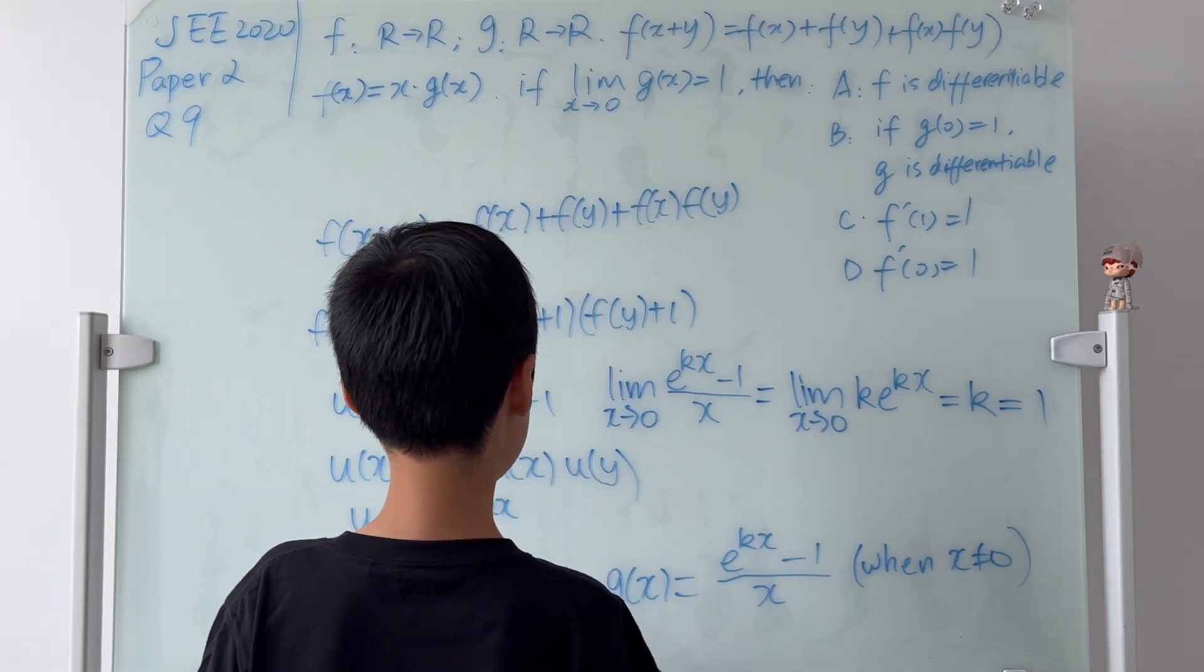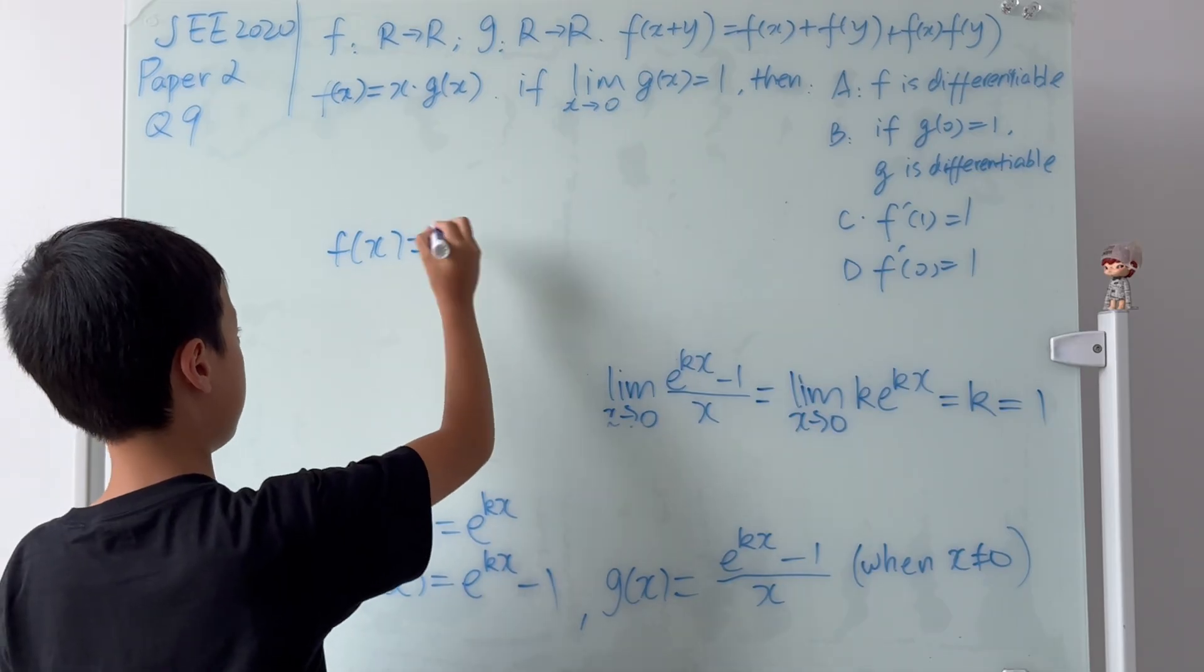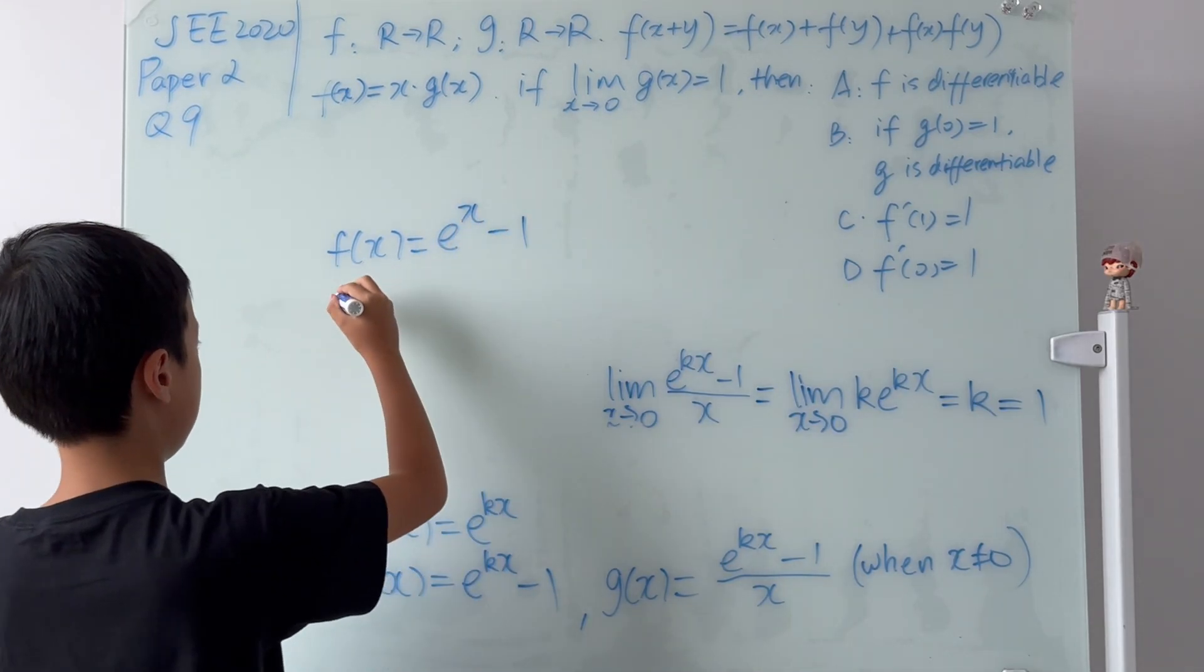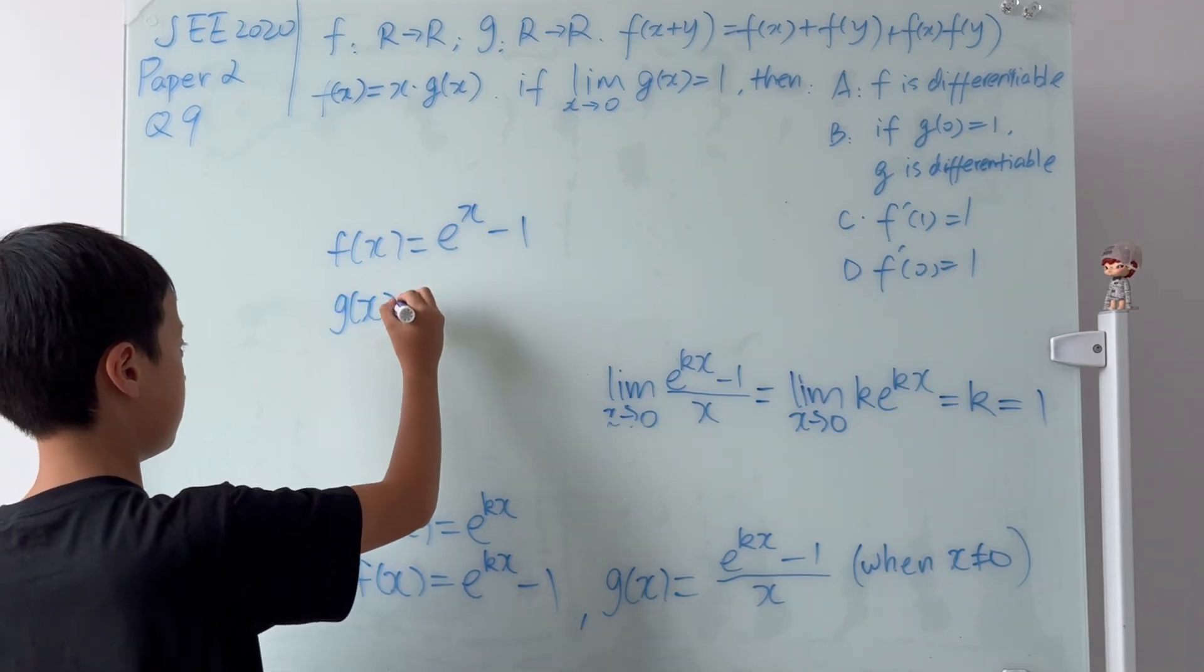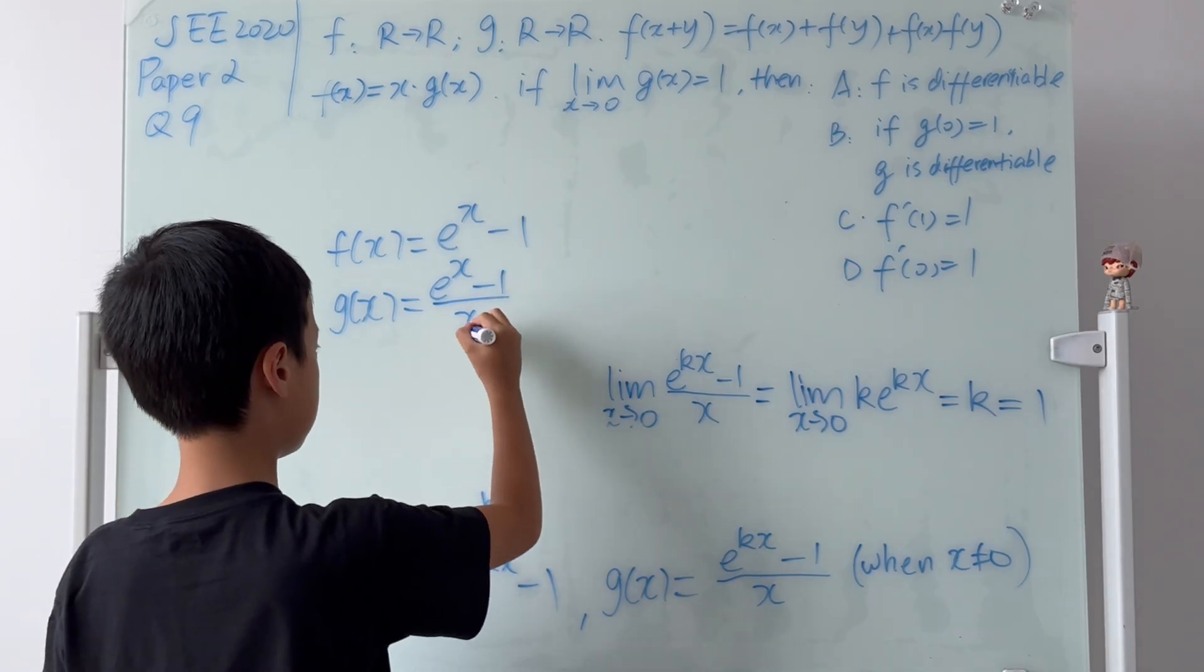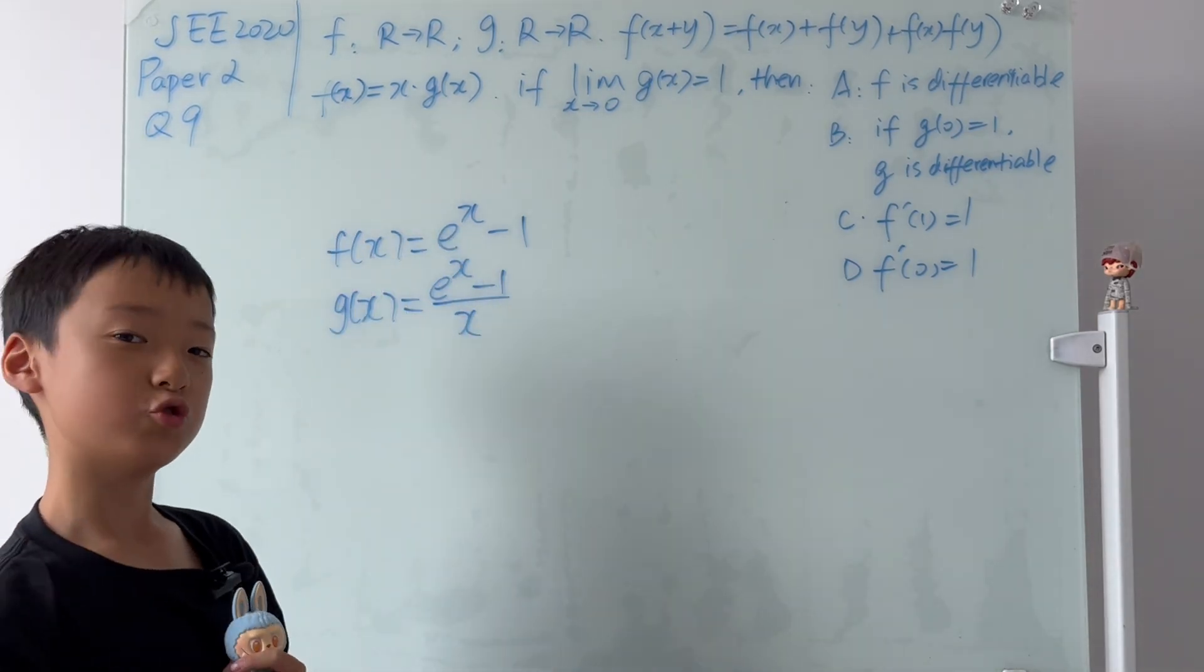Now, I'm just going to rub everything out. f(x) is equal to e to the power of 1 times x, which is just x, minus 1. g(x) is equal to (e^x - 1) over x. Now, let's look at the choices.